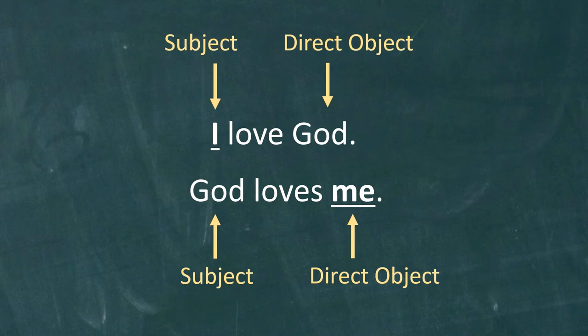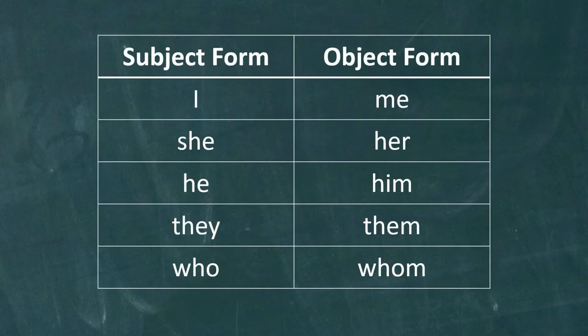The pronoun has one form when it is the subject and another form when it is the direct object. The same is true for other pronouns in English. We say I love her, not I love she. Likewise, we say she loves me, not her loves me.